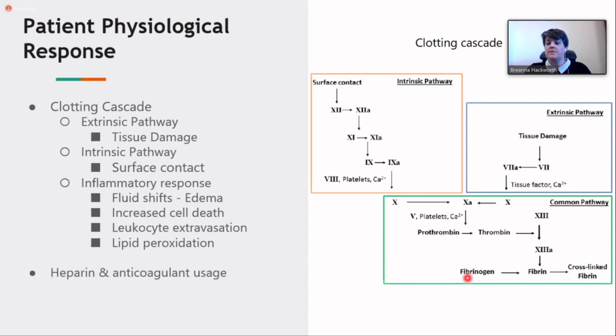When this happens, you're going to get clots, but also you're going to activate the inflammatory responses of the patient, which includes edema, increased cell death, leukocyte extravasation, and lipid peroxidation. Some ways that we as healthcare professionals are able to minimize this is with the use of heparin or other anticoagulants, but also the biocompatible circuits that we're using tries to minimize that response as well. Off to the right is just a little review of that clotting cascade.